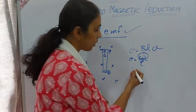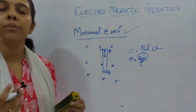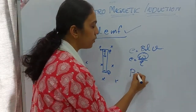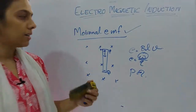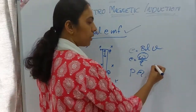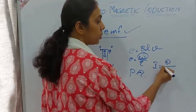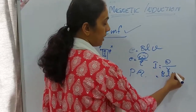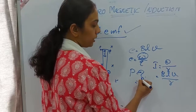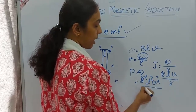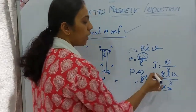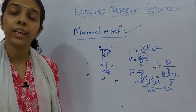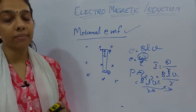Now for power or energy considerations: power induced in the conductor is P = I²R. Since I = E/R = BLV/R, substituting gives P = B²L²V²/R² × R, which simplifies to P = B²L²V²/R. This is the power induced in the circuit.